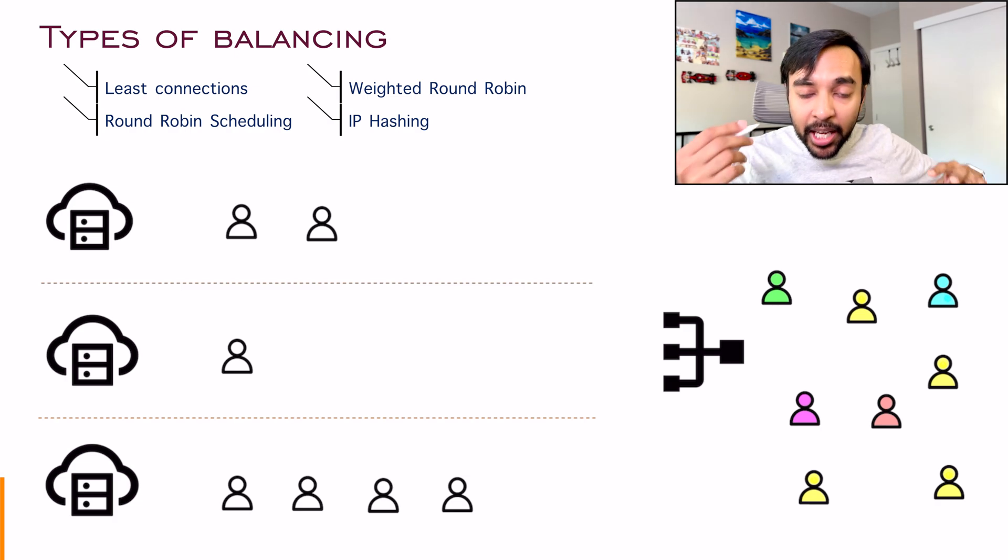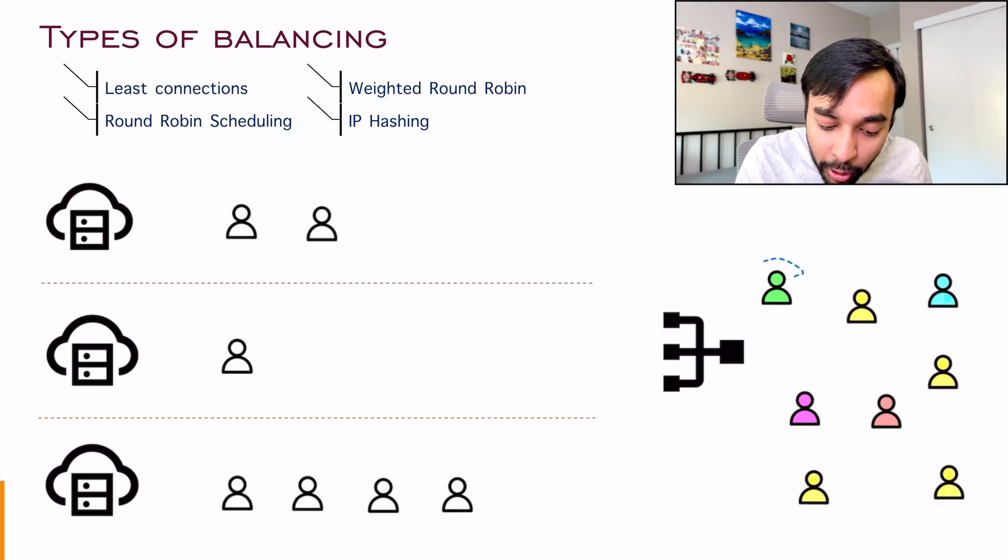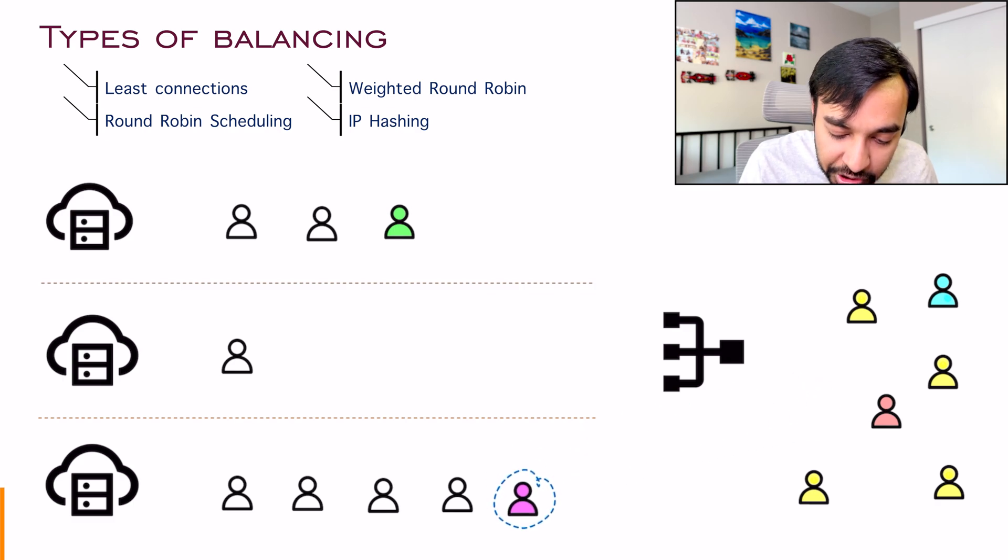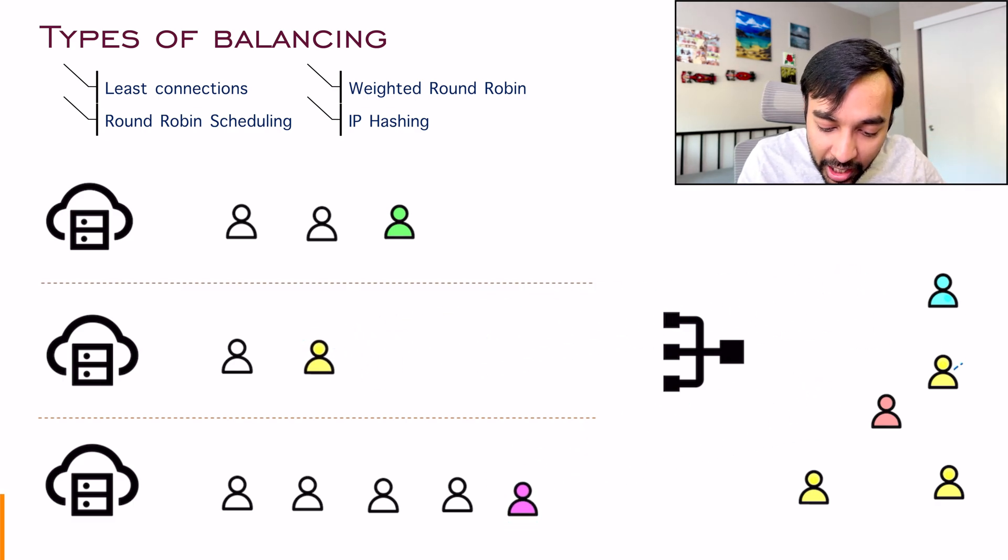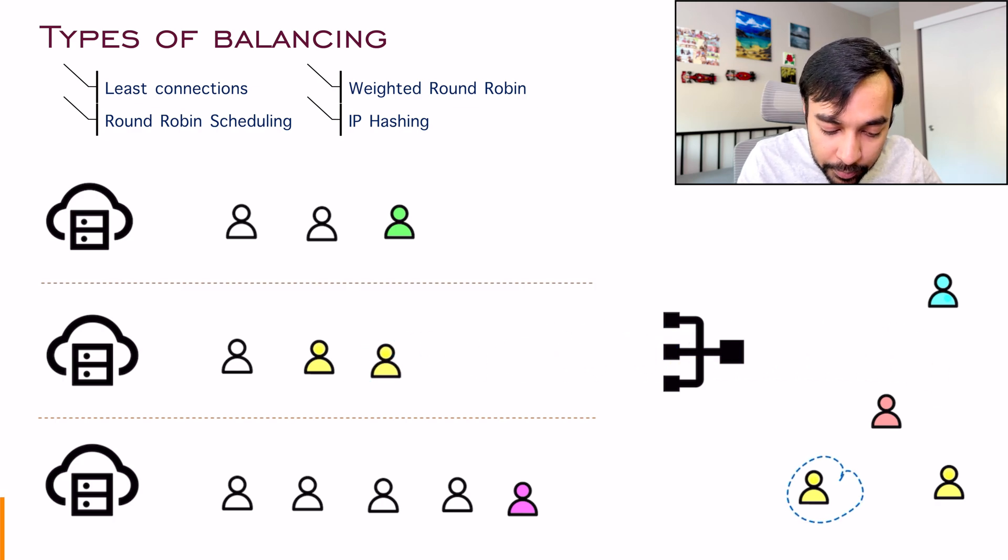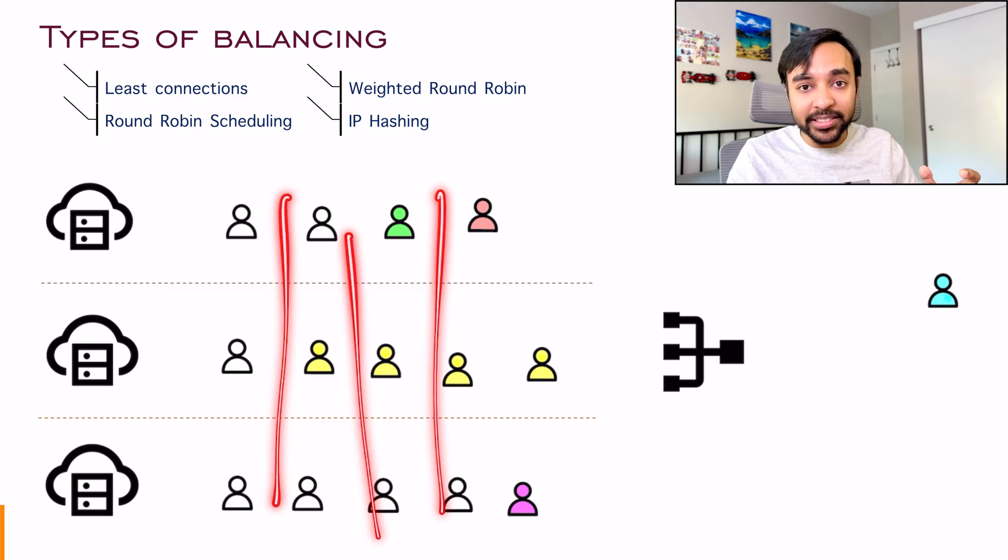So when I'm scheduling all of my clients, what I will do is I will schedule one client to server one, other client to server three. But whenever I see a yellow client, I will allot them to server number two. So this way, once again, I'm making sure that all of my load is balanced.